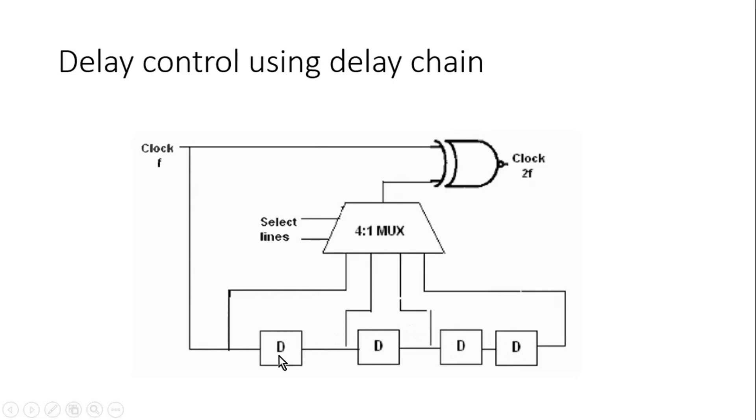D represents a delay element. This can be a buffer or it can be a D flip-flop which can work at very very high clock frequency. Friends, we are using multiple delay elements. This input signal is applied to the first delay element and after a certain delay it gives its input at its output. Then it is applied at the second delay element and again after a certain delay it will give its output. Then again it is applied at the next delay element and so on.